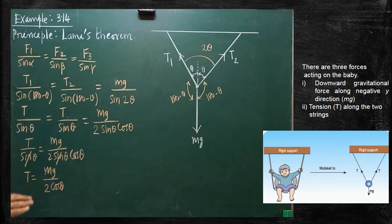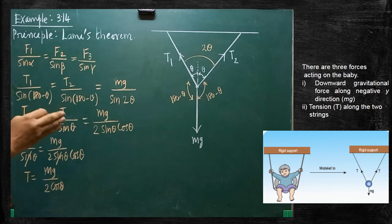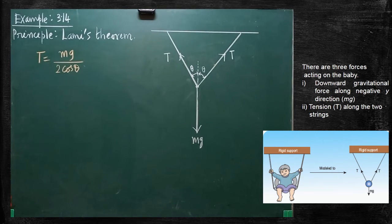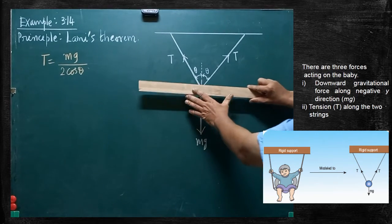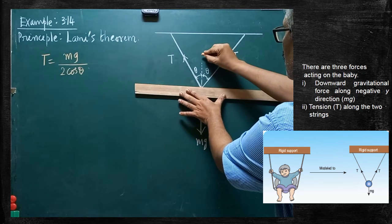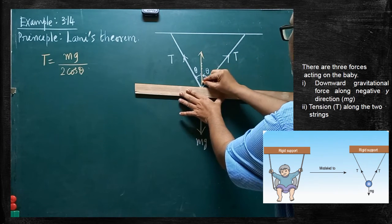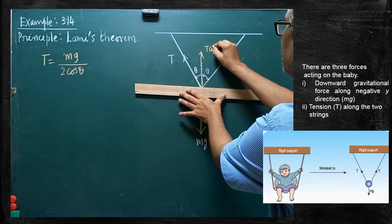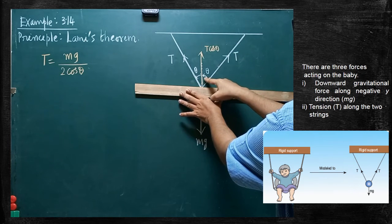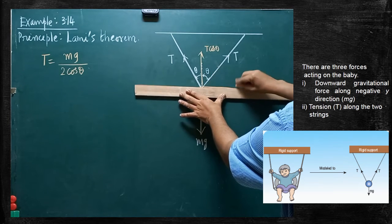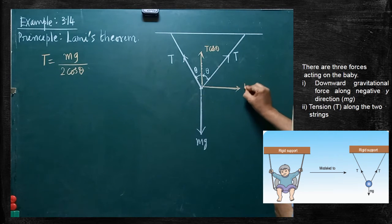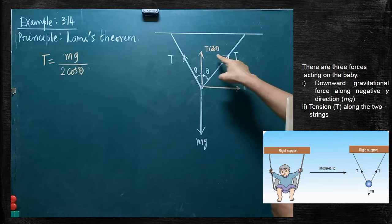This result can be proved in another form as well — with the help of resolving the vectors from the diagram. Now we are going to resolve the tensions into two components: vertical component and horizontal component. I am going to draw the diagram on the board. This tension is a vector. The horizontal component of tension T, where theta is the angle, will be T cos theta. The vertical component will be T sin theta. So T is resolved into T cos theta and T sin theta.